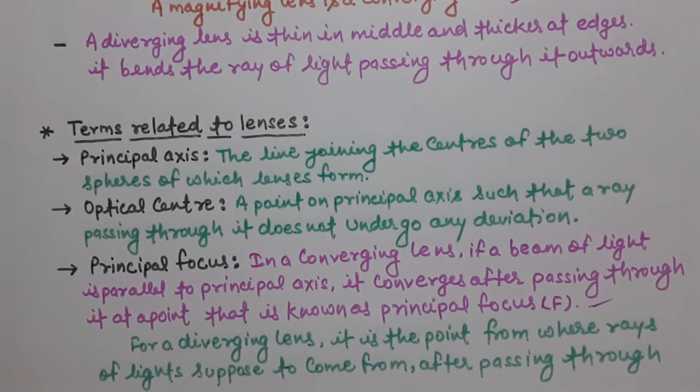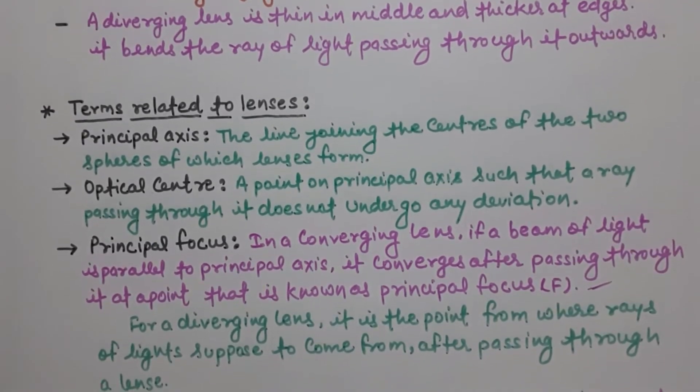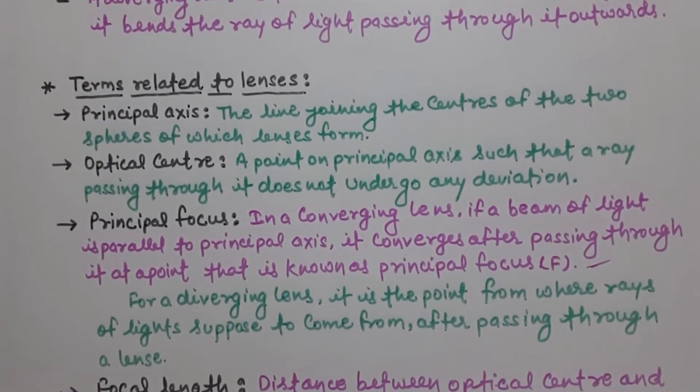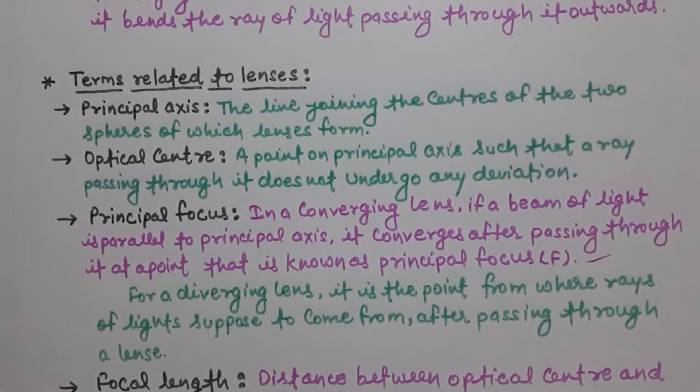But in case of diverging lens, it is the point from where the rays of light suppose to or appears to come from after passing through a lens. Clear?